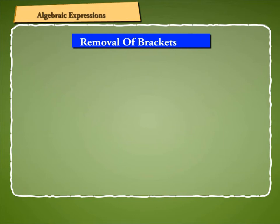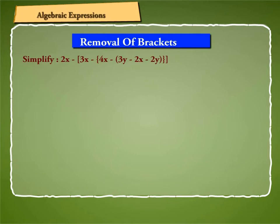Let us now solve a problem to understand the sequence of removal of brackets. Let us simplify 2x minus 3x minus 4x minus 3y minus 2x minus 2y.